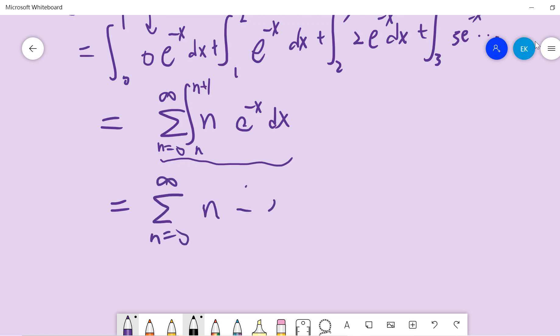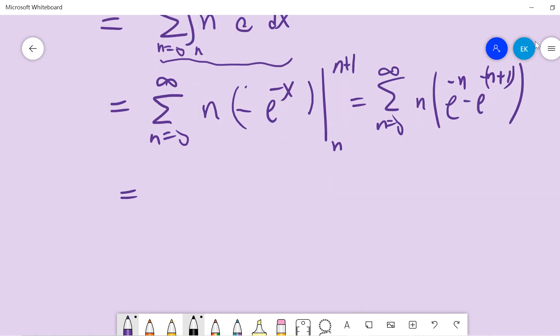This is n times minus exponential minus x. There's a minus sign, so we return to integrate this.